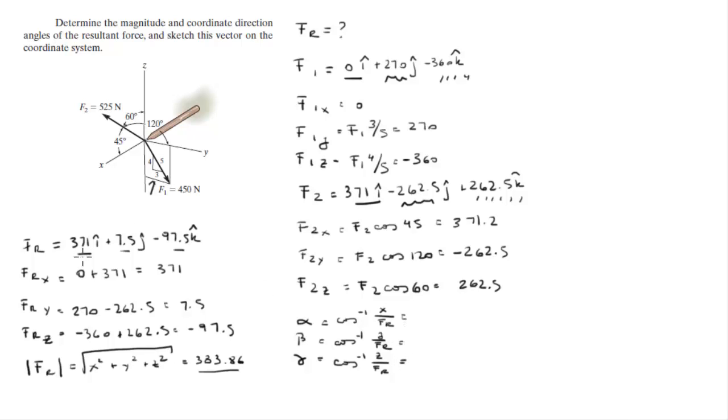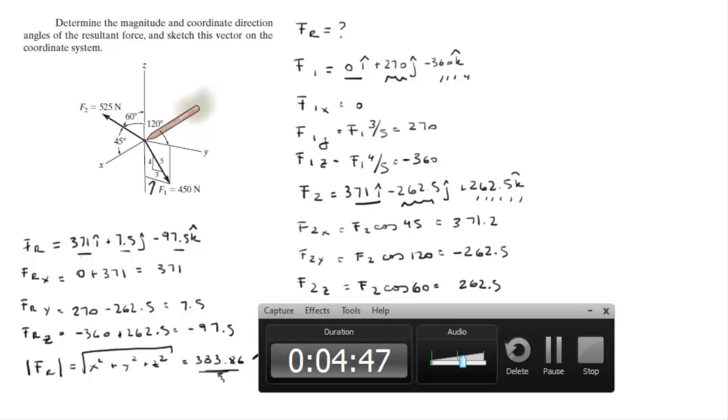These are the components and this is the magnitude we calculated. When you plug these numbers in you're going to get that the angles are 14.76 degrees for the x direction angle, 88.9 degrees for the y direction angle, and 104.7 degrees for the z direction angle. Final answer for the magnitude and final answer for the direction angles.